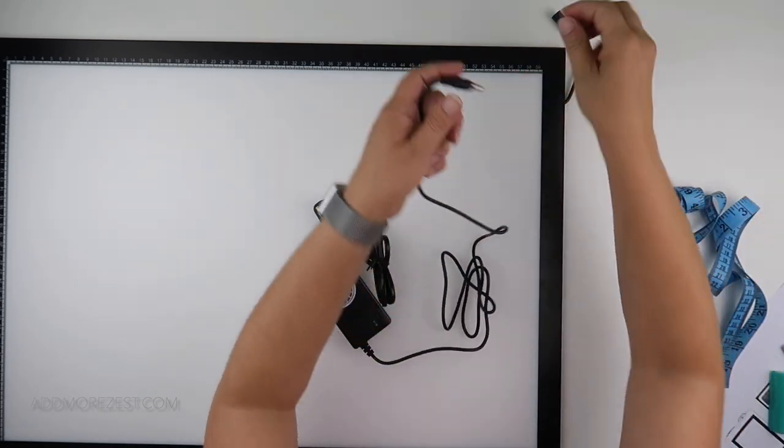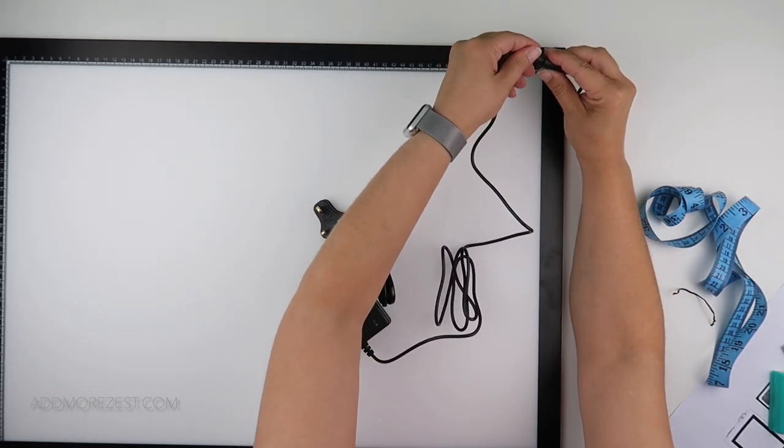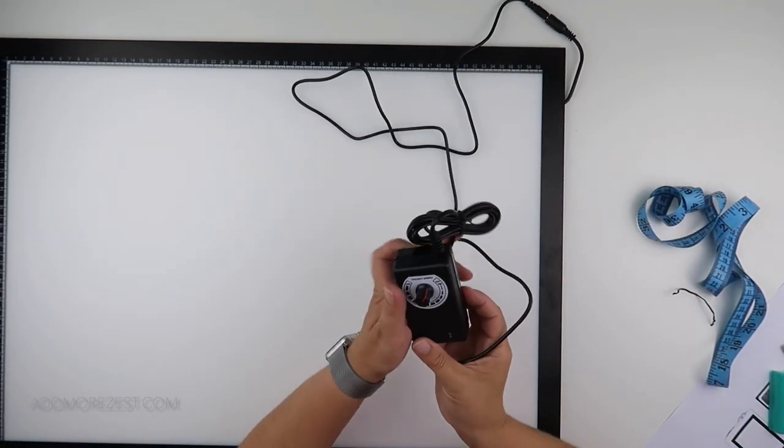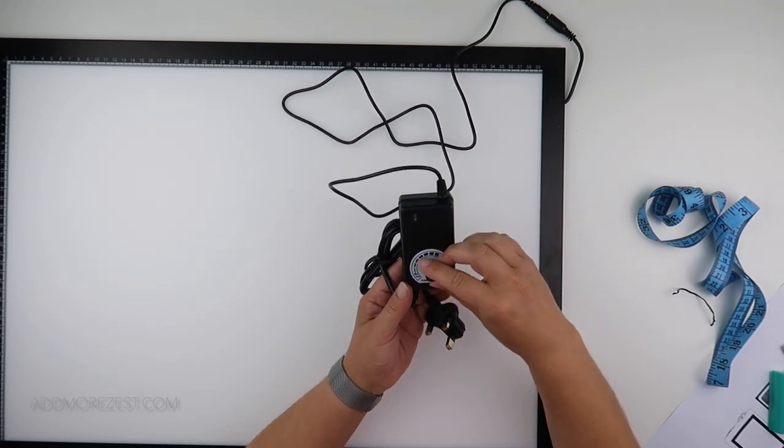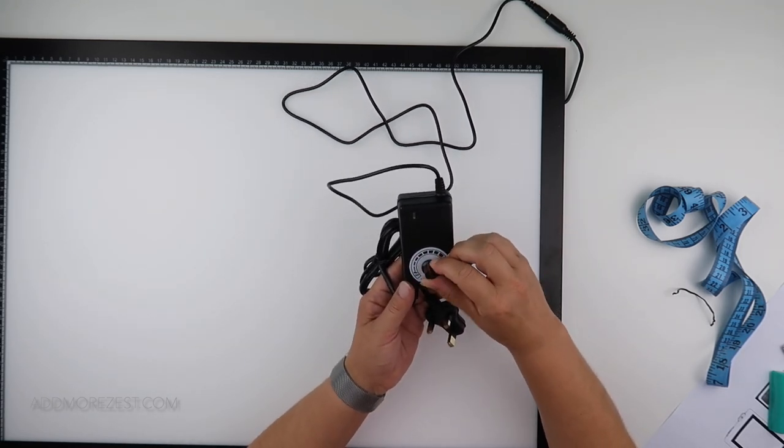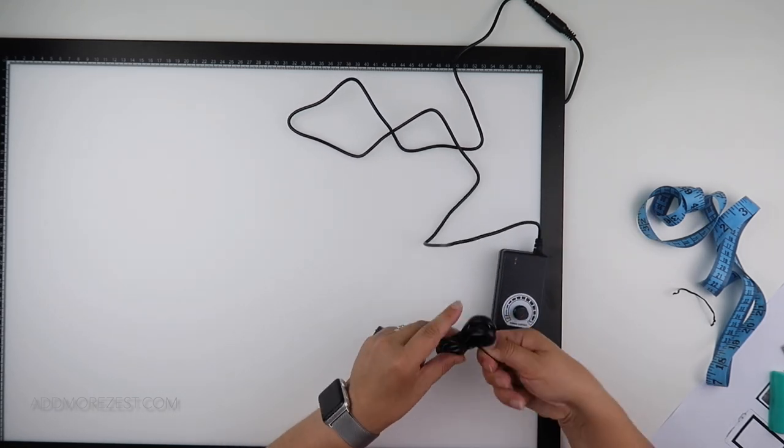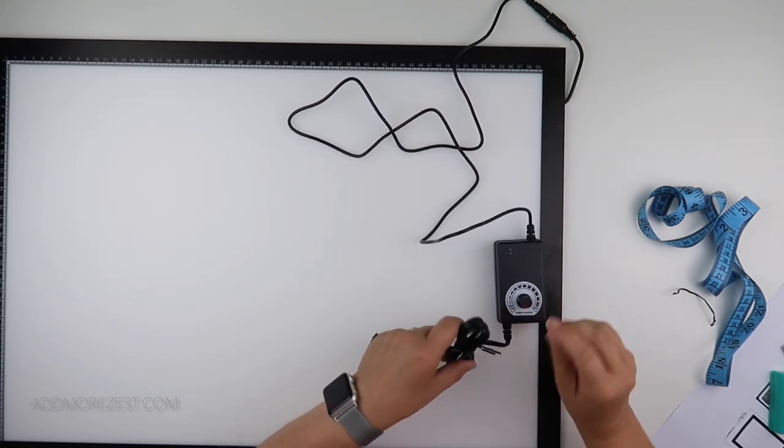Whereas this one doesn't work that way, it plugs into here, which means you then have all of this wire, then you have a control. So this is where you can turn it off and turn it up to maximum. And then we get to the plug part.